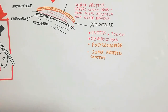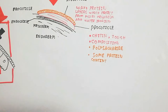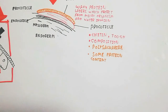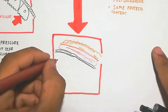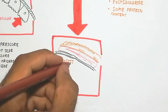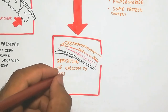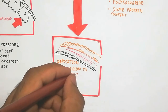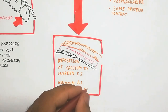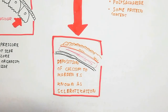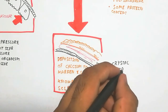Arthropods periodically shed their exoskeleton due to growth, because growth is stopped by the rigid exoskeleton. This periodic shedding is the major key to the animal's growth. Calcium carbonate is deposited into the procuticle to create rigidity. This hardening by calcium carbonate deposition is known as sclerotization.